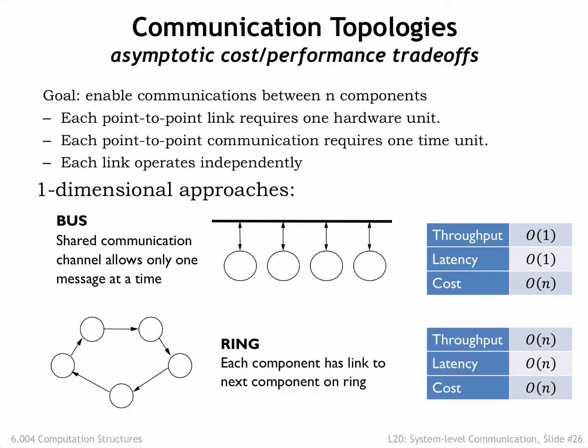In a ring network, each component sends its messages to a single neighbor, and the links are arranged so that it's possible to reach all components. There are n links in total, so throughput and cost are both order n. The worst-case latency is also order n, since a message might have to travel across n-1 links to reach the neighbor immediately upstream. Ring topologies are useful when latency isn't important, or when most messages go to the immediately downstream component — that is, when the components form a processing pipeline.